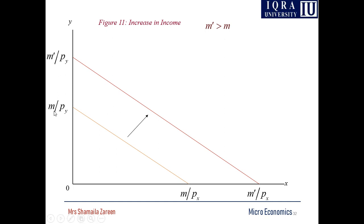Whenever the income of the person increases, he will purchase more food and more clothing — more of x and more of y. That is why the budget line will shift outward from the original budget line, meaning m-dash is greater than m. For example, the person's salary was 10,000 and it has been increased to 20,000, but prices of food items or clothing items remain the same.